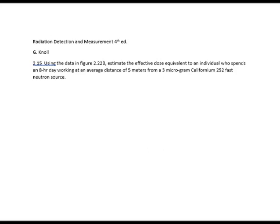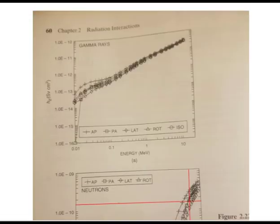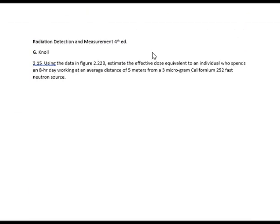Using the data in figure 2.22b, it's down here, we got it. We'll get back to it in just a minute. Estimate the effective dose equivalent to an individual who spends an 8 hour day working at an average distance of 5 meters from a 3 microgram californium-252 fast neutron source.